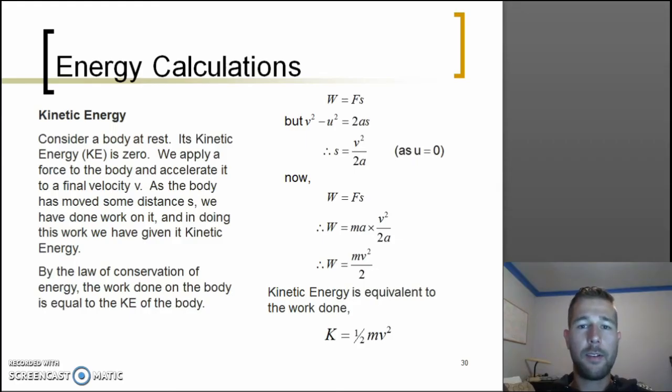So this slide runs for a derivation for kinetic energy. Let's just consider a body at rest, so initial velocity is zero. Now what we're going to do is have a look at our motion equations and also our work equation and combine them to work out the energy of the system. Okay, so when we apply a force to the body and accelerate it, we accelerate it to a final velocity V, and because the body has actually moved some distance S, work has been done to it. So that's the definition.